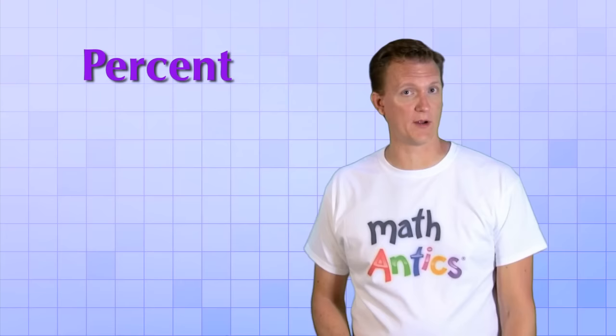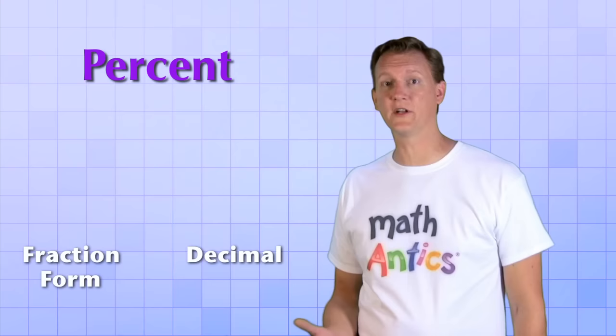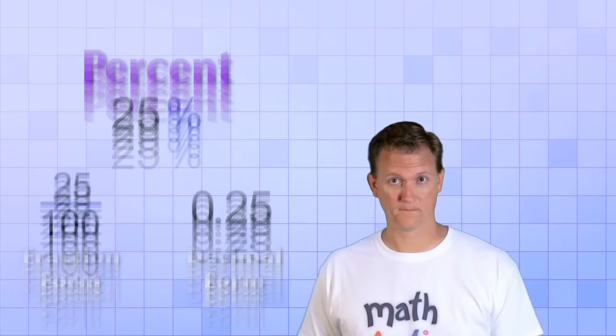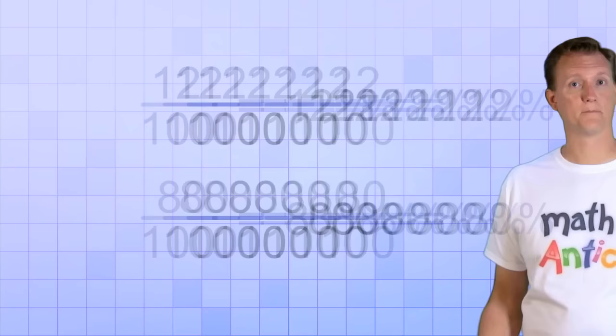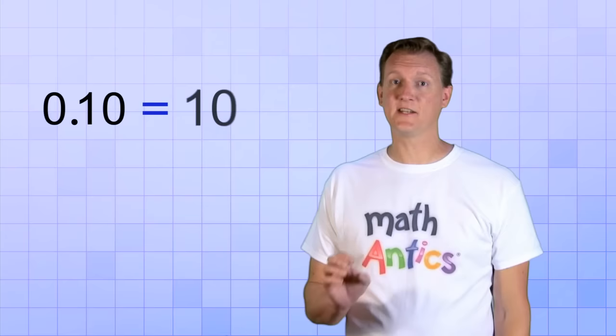Alright, so now you know that a percent is a special fraction that always has 100 as the bottom number. And you know that you can rewrite percents in either their fraction form or their decimal form. 25% is 25 over 100 or 0.25. But keep in mind that you could go the other way too. If someone gives you a fraction with 100 as the bottom number, you can rewrite it in percent form. If you get 12 over 100, you can say that's 12%. And if you get 80 over 100, you can say that's 80%. Or, if you get the decimal 0.10, you can say that's 10%. And if you get the decimal 0.38, you can say that's 38%.